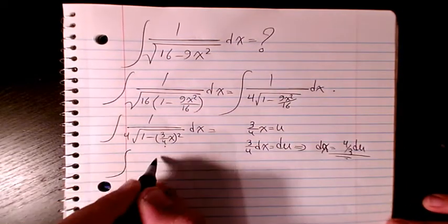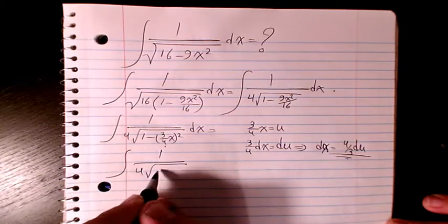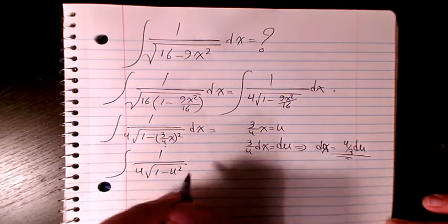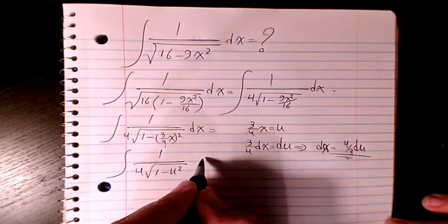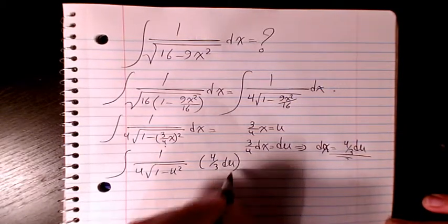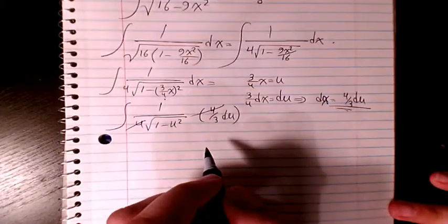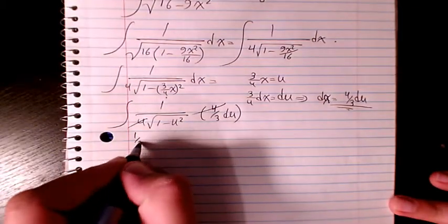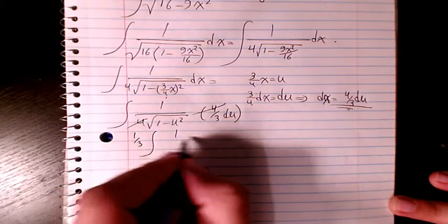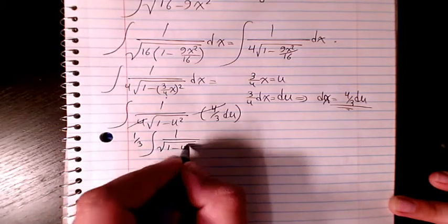Then it will be 1 over 4 square root of 1 minus u squared, and instead of dx I can write 4 over 3 du. Then this 4 and 4 cancel out, it will be 1 over 3, 1 over square root of 1 minus u squared du.